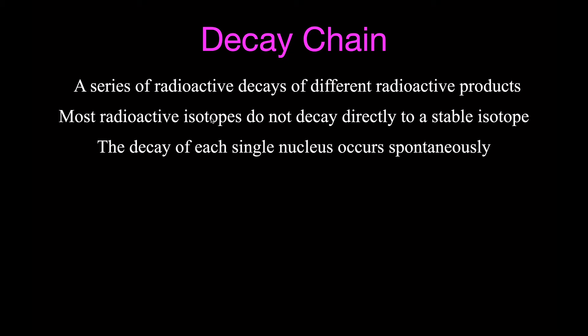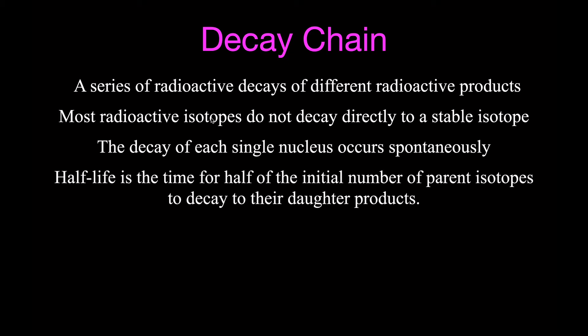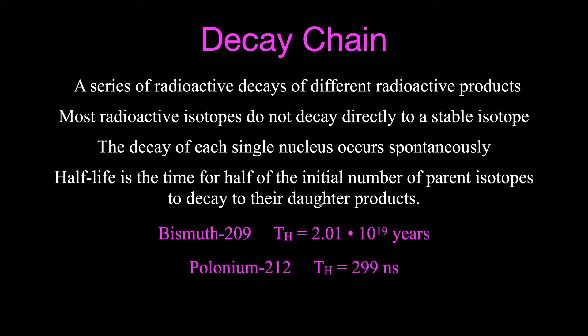We don't know which nucleus in a sample of radioactive material is actually going to decay, but they will decay spontaneously. That leads us to the idea of half-life. Half-life is the time it takes for half of the initial number of parent isotopes to decay to their daughter products. There is a great range in half-lives: bismuth-209 has the longest at 2.01 × 10¹⁹ years, while polonium-212 has a half-life of just 299 nanoseconds (10⁻⁹ seconds).